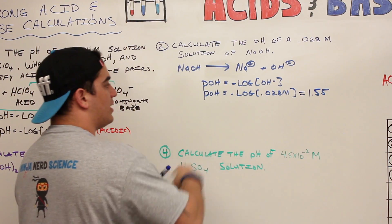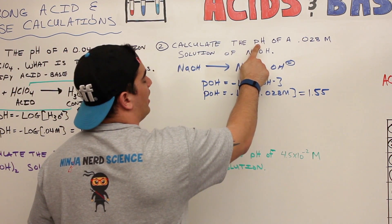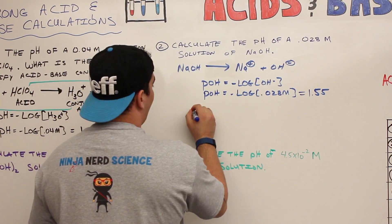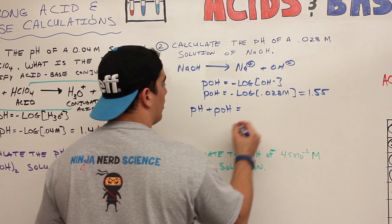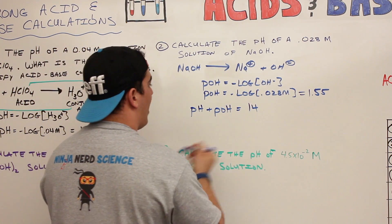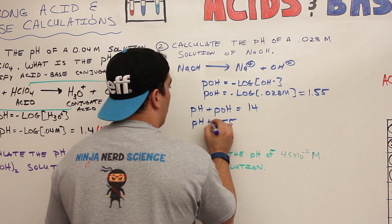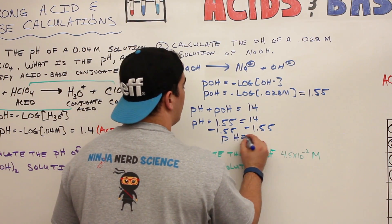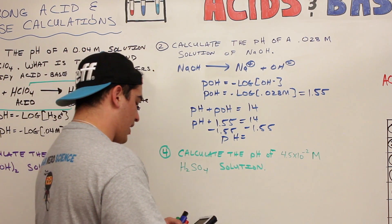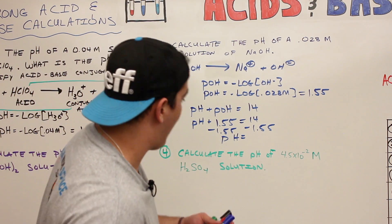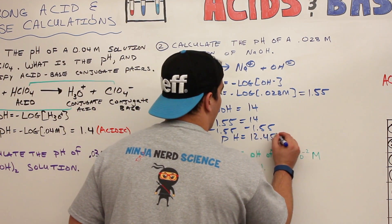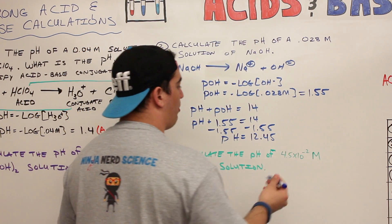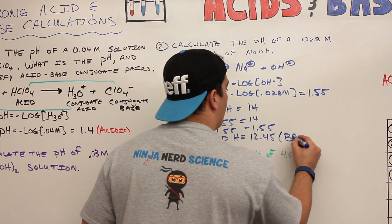But we're not done, because the question asked for pH, not pOH. We go back to the formula from the introductory video: pH + pOH = 14. We have pOH = 1.55, so we subtract: pH = 14 − 1.55 = 12.45. This should make sense because we're dealing with a strong base, and as you approach 14 on the pH scale, the solution becomes more basic, indicating a high hydroxide concentration. So this is a basic solution.